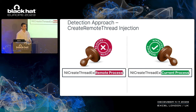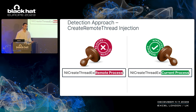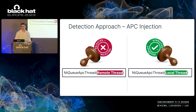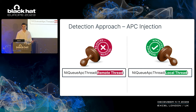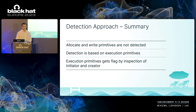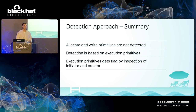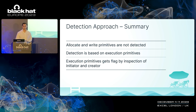As I mentioned in the motivation for this research, I wanted to understand how EDRs distinguish legitimate and malicious use of a feature. Taking thread creation as an example, EDRs would not usually allow a process to create a thread for another process. Another example would be detecting a synchronous procedure call injection — EDRs will not usually allow an APC to be queued to a thread belonging to processes other than the current process. In summary, allocate and write primitives in their most basic forms are not detected; detection is based mainly on the execution primitive.